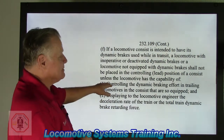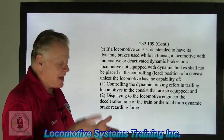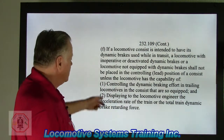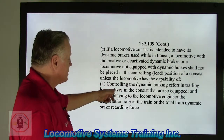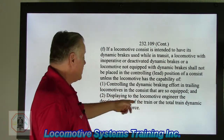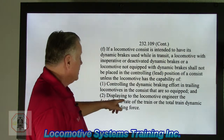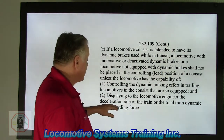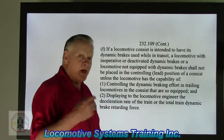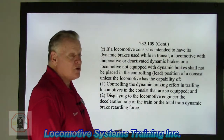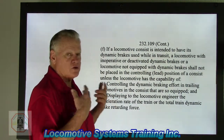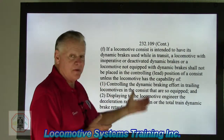If it's the lead position, it has to have dynamic braking and it has to work. Number one: controlling the dynamic brake effort in trailing locomotives in the consist that are so equipped. Number two: displaying to the locomotive engineer the deceleration rate of the train or total train dynamic brake retarding force.